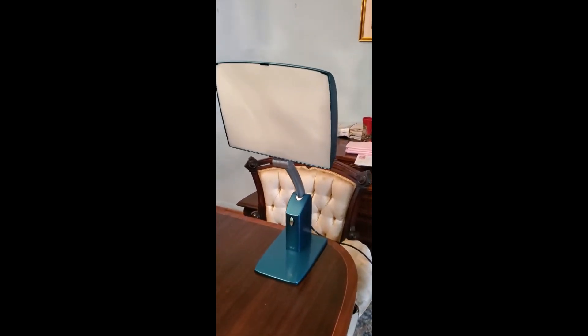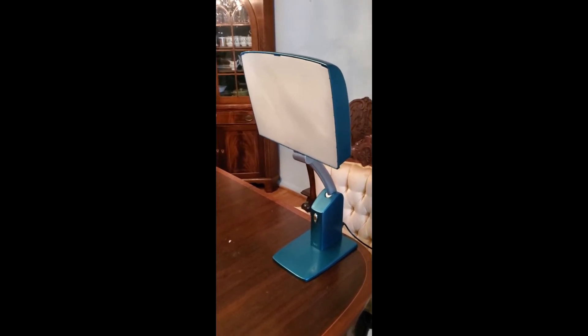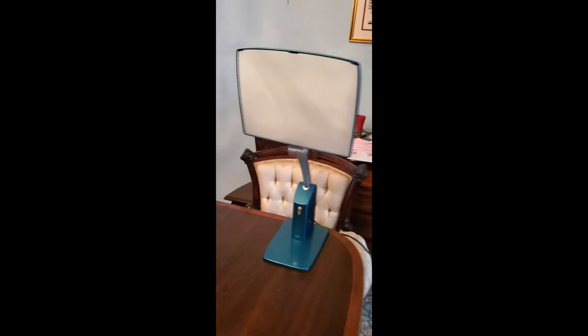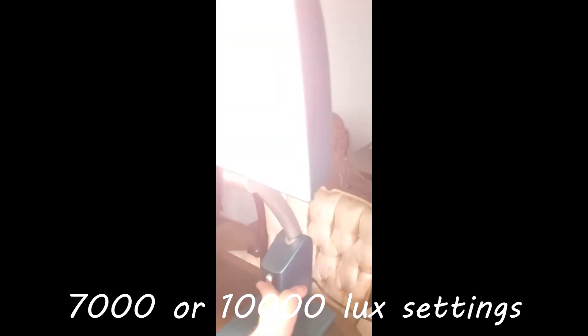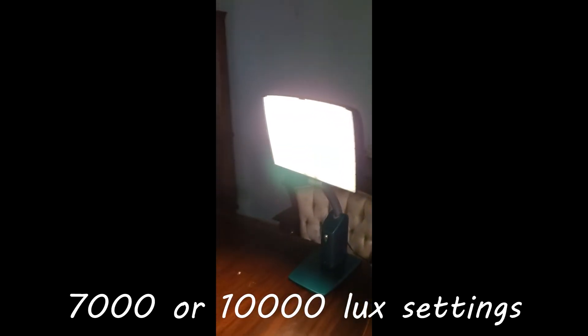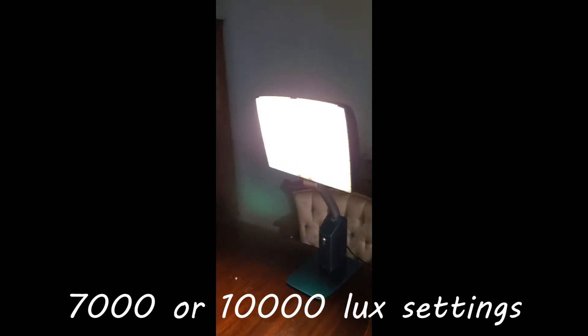My dad actually bought this one for me about 10 years ago, and it's still working great today. So I wanted to show you some of the settings and just how to use it. So I'm going to turn off the light. It comes with two basic settings. We have the lower one that gives out about 7,000 luxes, which is still very strong. And then we also have the higher setting that gives you your 10,000. That's what I always use every day.